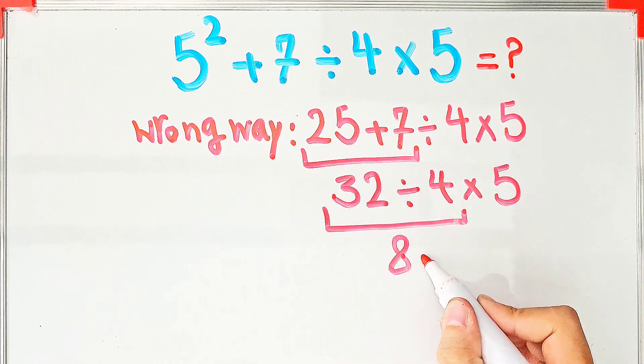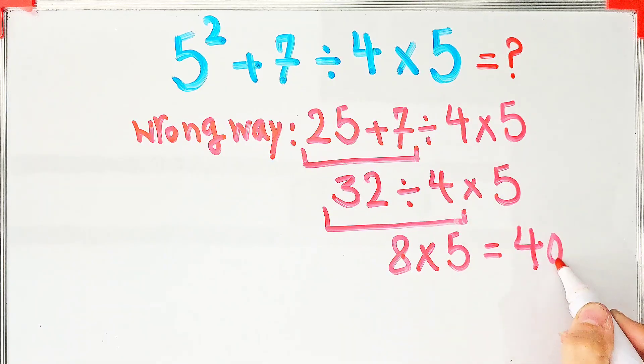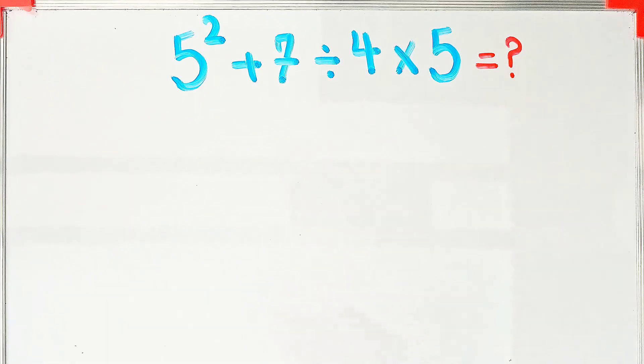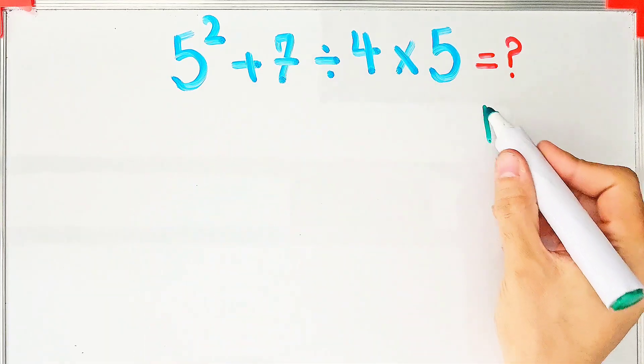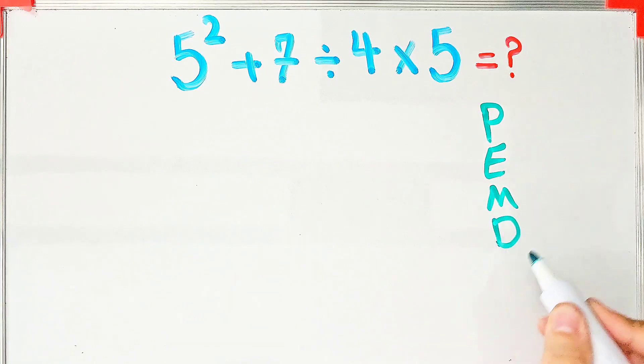and 8 times 5 equals 40. But this answer is definitely wrong. Let's solve this step by step together. To solve this question we need to follow the order of operations, which is PEMDAS. PEMDAS shows the priority of the mathematical operations.